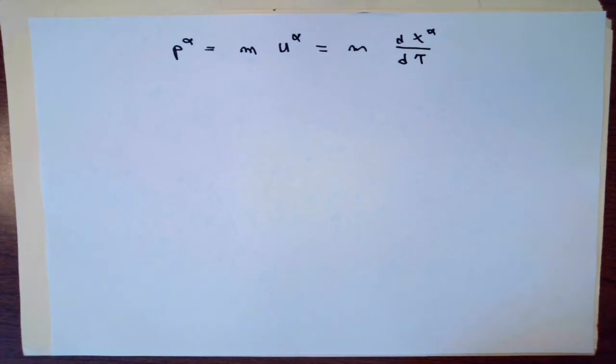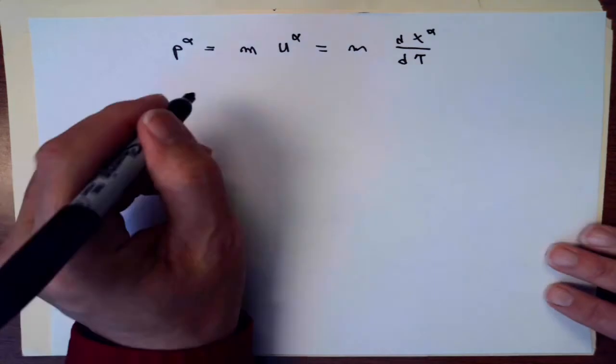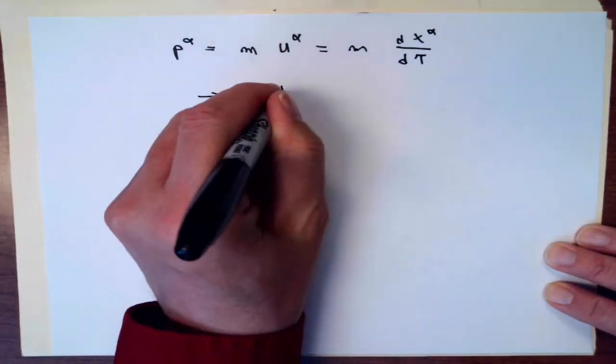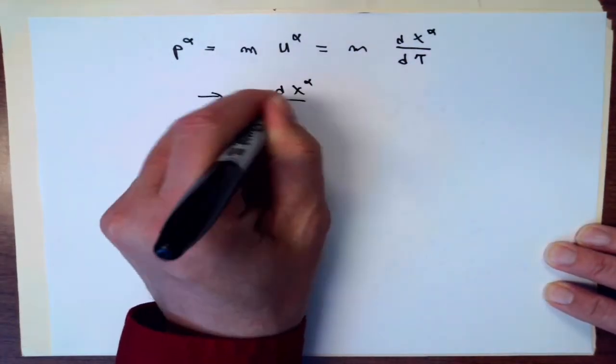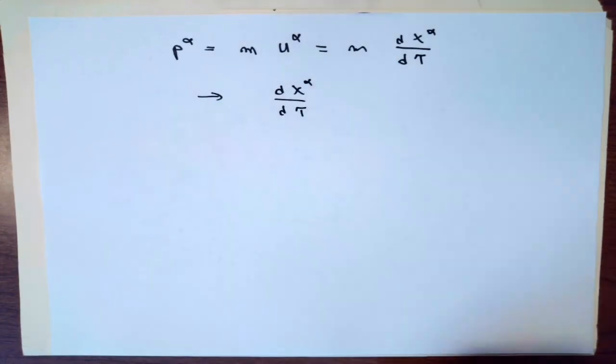In many of the things we're going to look at, the mass of the object wouldn't matter, and we would just think of having the alpha component of 4-momentum per unit mass, which would just be the derivative of x-alpha with respect to tau. For particles with a non-zero mass, this is just a component of the 4-velocity.